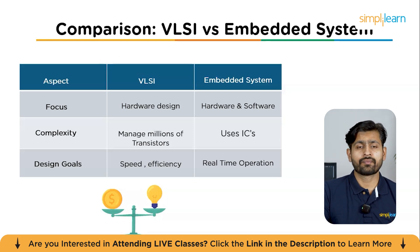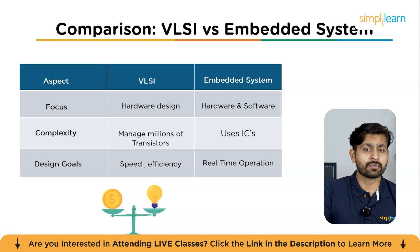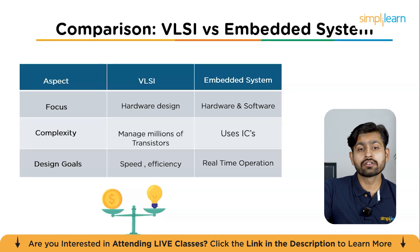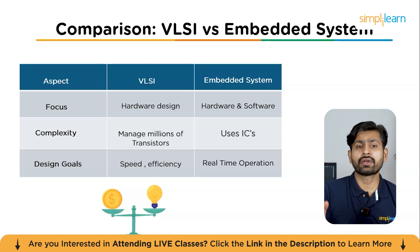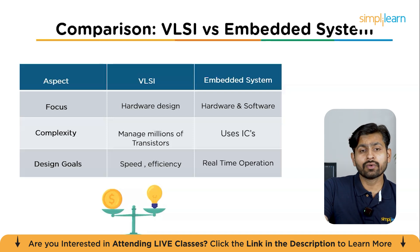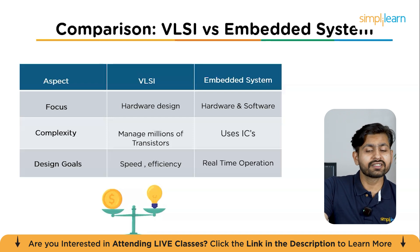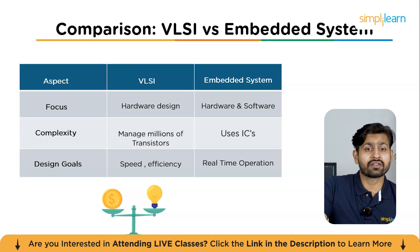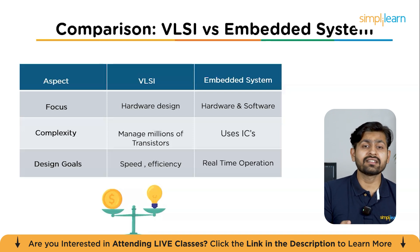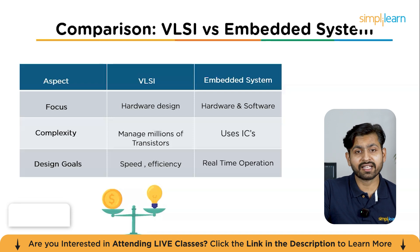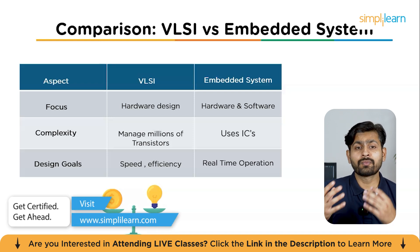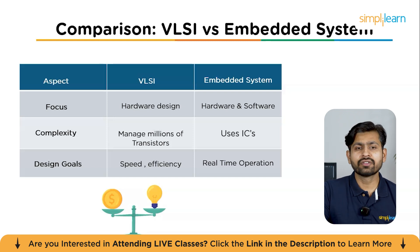Regarding design goals, VLSI primary goals are speed, energy efficiency, and chip size — summarized as PPA — plus yield (how many good chips per wafer) and cost per chip. For embedded systems, primary goals are real-time correctness and reliability, battery life, low power consumption, and real-time operation. In summary, VLSI optimizes a multiplier to run faster with less power and fewer transistors, whereas embedded systems ensure a motor starts exactly 10 milliseconds after a button press, the display updates smoothly, and the battery lasts all day.